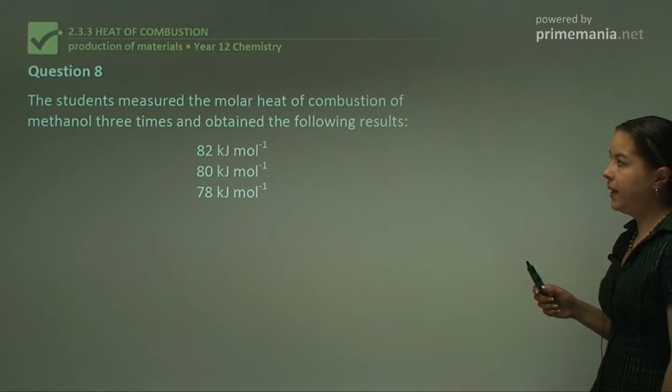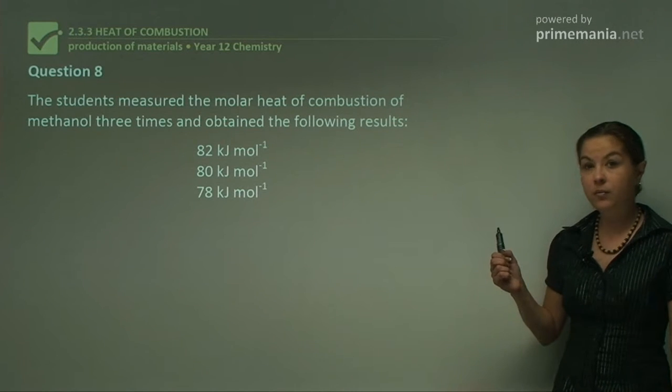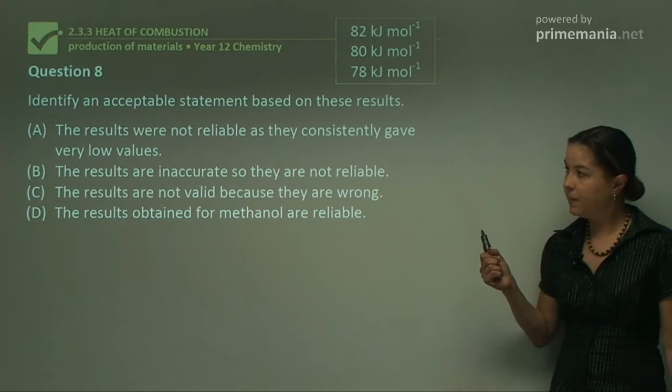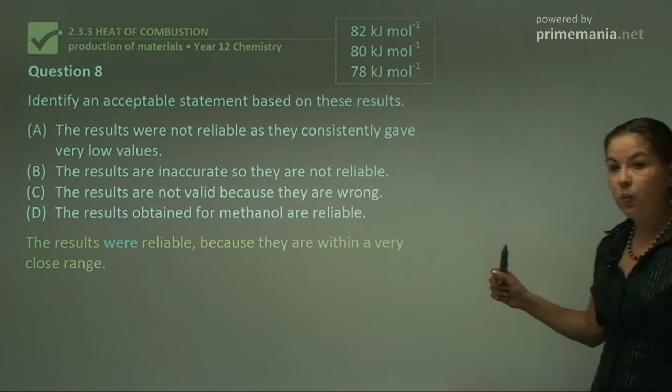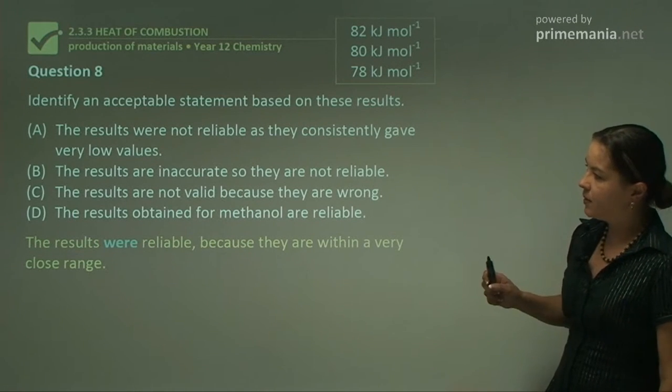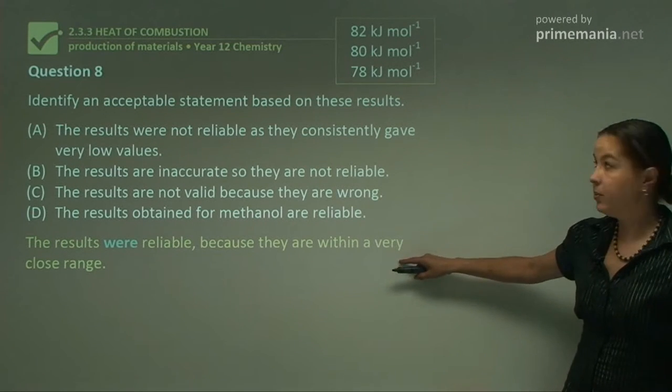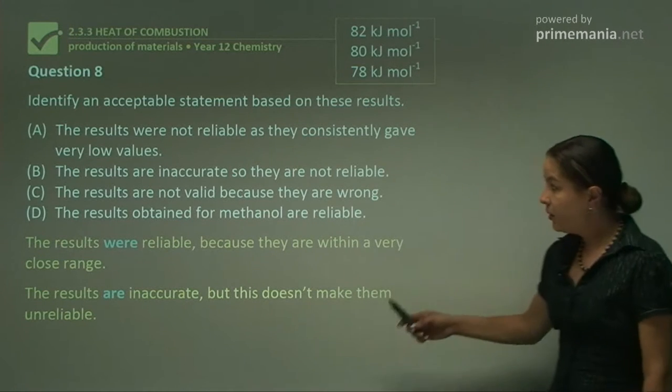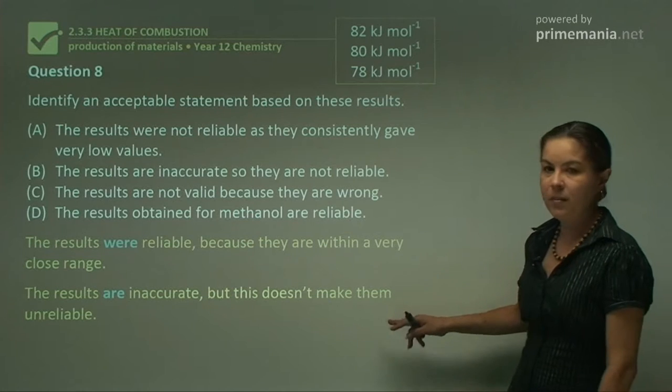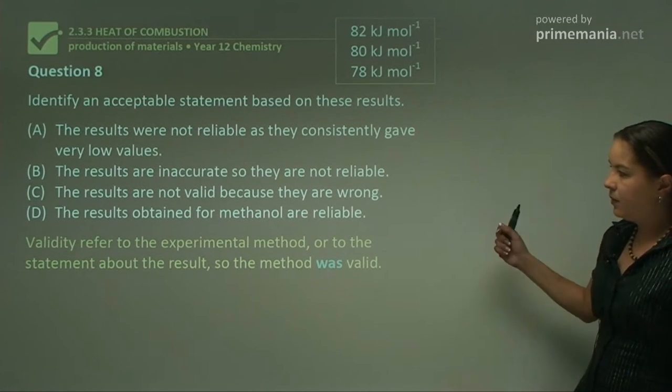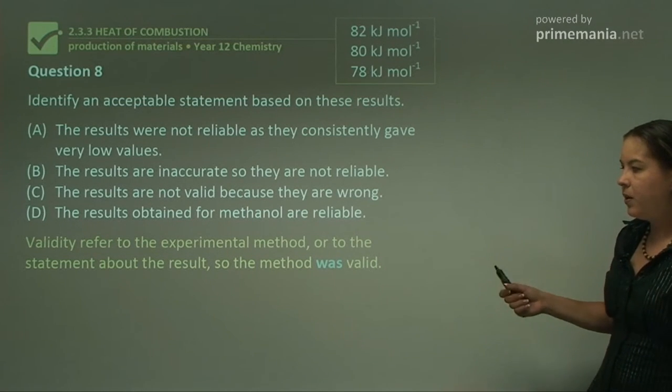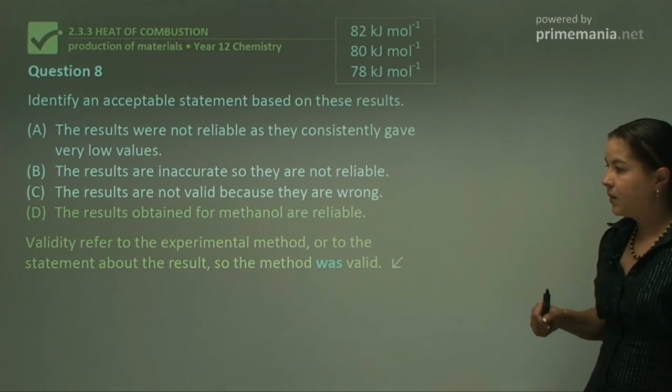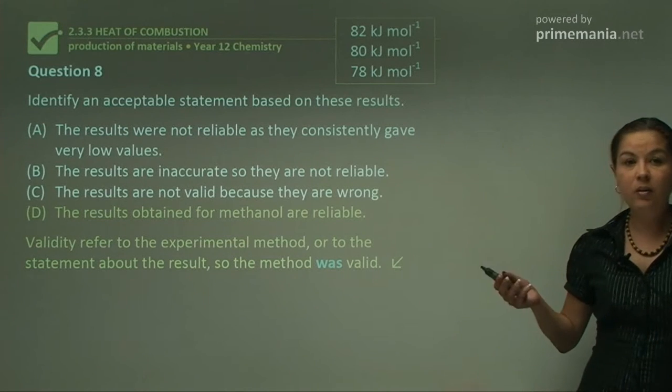Question 8: The students measured the molar heat of combustion of methanol three times and obtained the following results. So they have pretty similar results. Now identify an acceptable statement based on these results. These results were reliable because they are within a very close range. Part A says they were not reliable because they consistently gave very low values, but they were actually reliable because they're very close to each other. Now looking at B, the results are inaccurate so they are not reliable. That's true—the results are inaccurate because they're not like the acceptable results, but this doesn't make them unreliable. Now validity, where it mentions validity, it actually refers to the experimental method or to the statement about the result. So the method actually was valid. They've got fairly consistent results. So our answer for this one is going to be the results obtained for methanol are reliable because they are consistent.